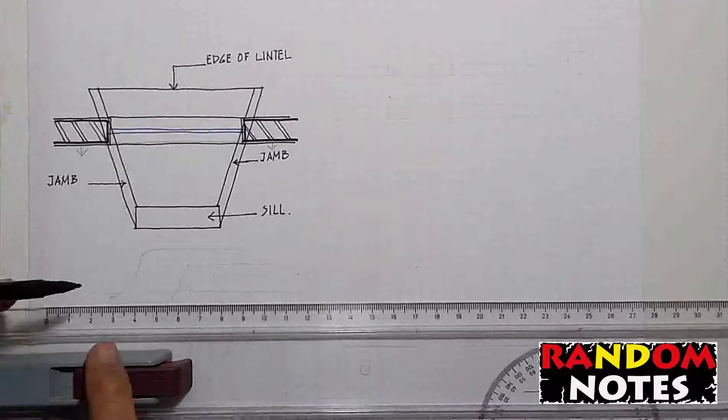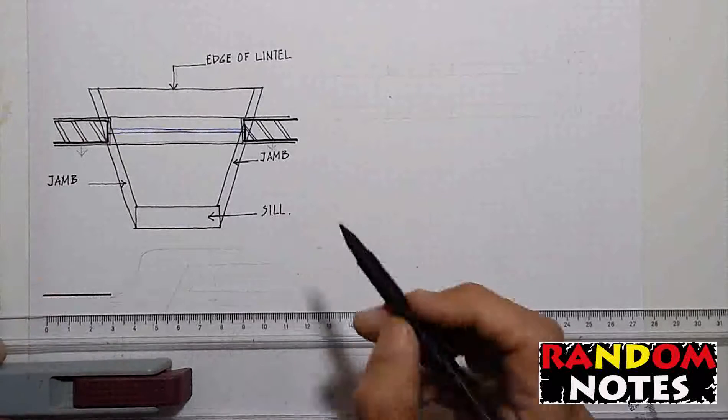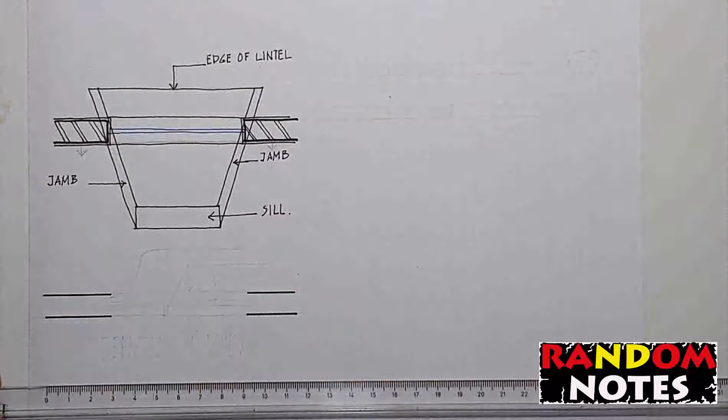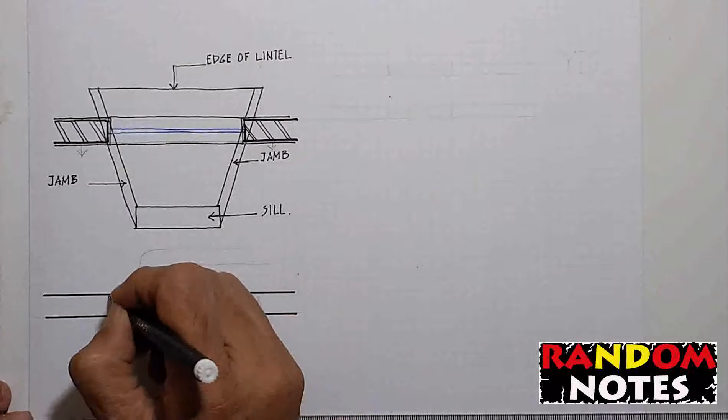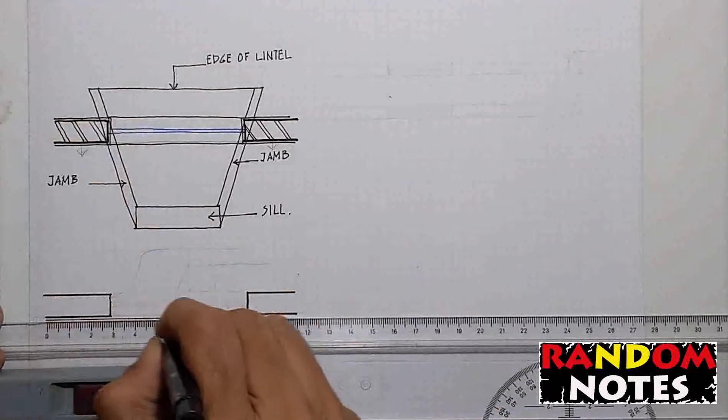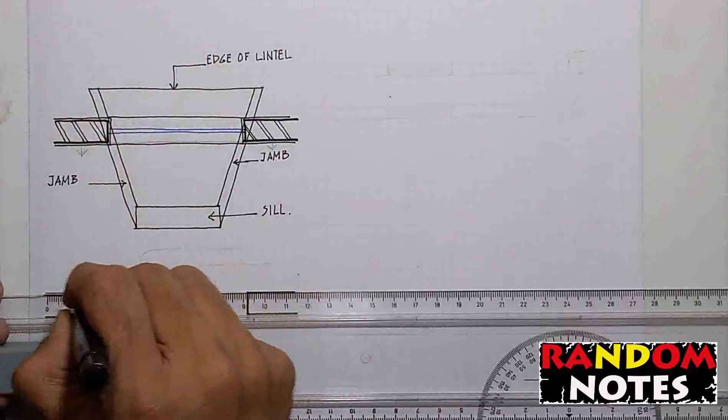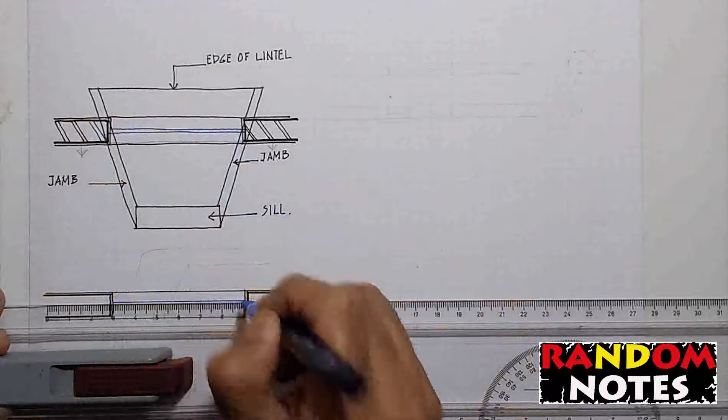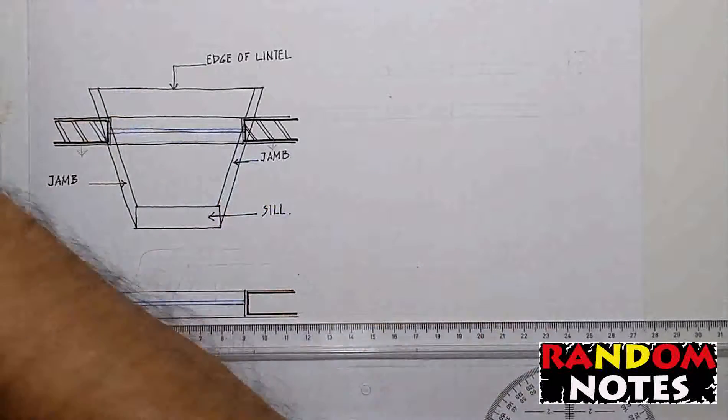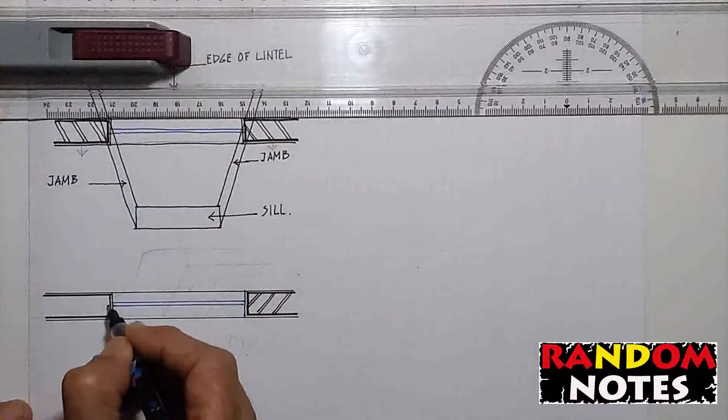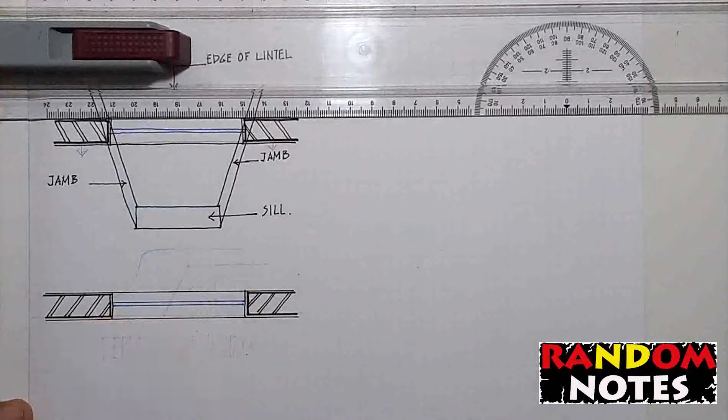The walls around the jam are drawn dark as they are getting cut by the section plane. These are the jam. The plaster line around the walls and the sill line can be drawn as one thin line. The two parallel lines in the middle graphically represent the window. Walls getting cut are hatched and this is how brick walls are hatched. And then the naming of its parts.